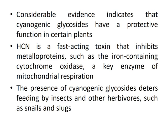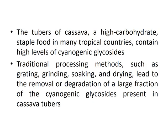The presence of cyanogenic glycosides deters feeding by insects and other herbivores such as snails and slugs. However, some herbivores have adapted to feed on cyanogenic plants and can tolerate large doses of cyanide. The tubers of cassava, Manihot esculenta, a high-carbohydrate staple food in many tropical countries, contain high levels of cyanogenic glycosides.